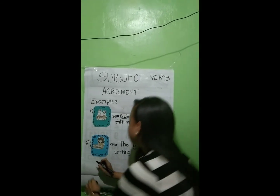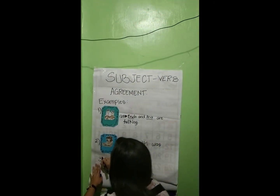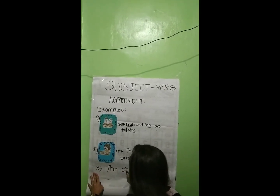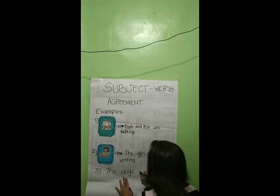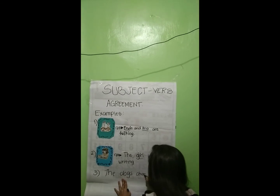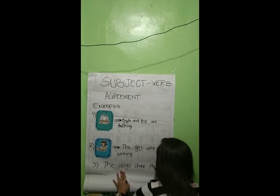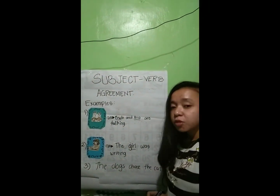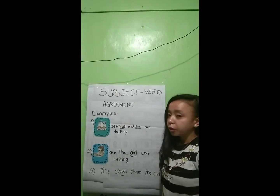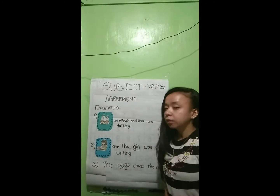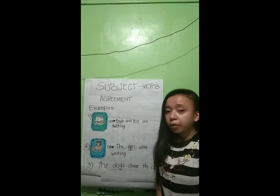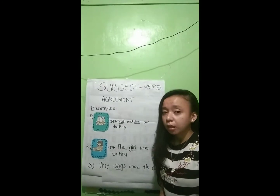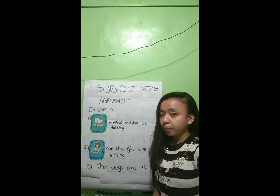For example number three: the dogs, the trees, the cats. Here, 'dogs' is plural and 'chase' is the plural verb also — the dogs is the subject and chase is the verb.